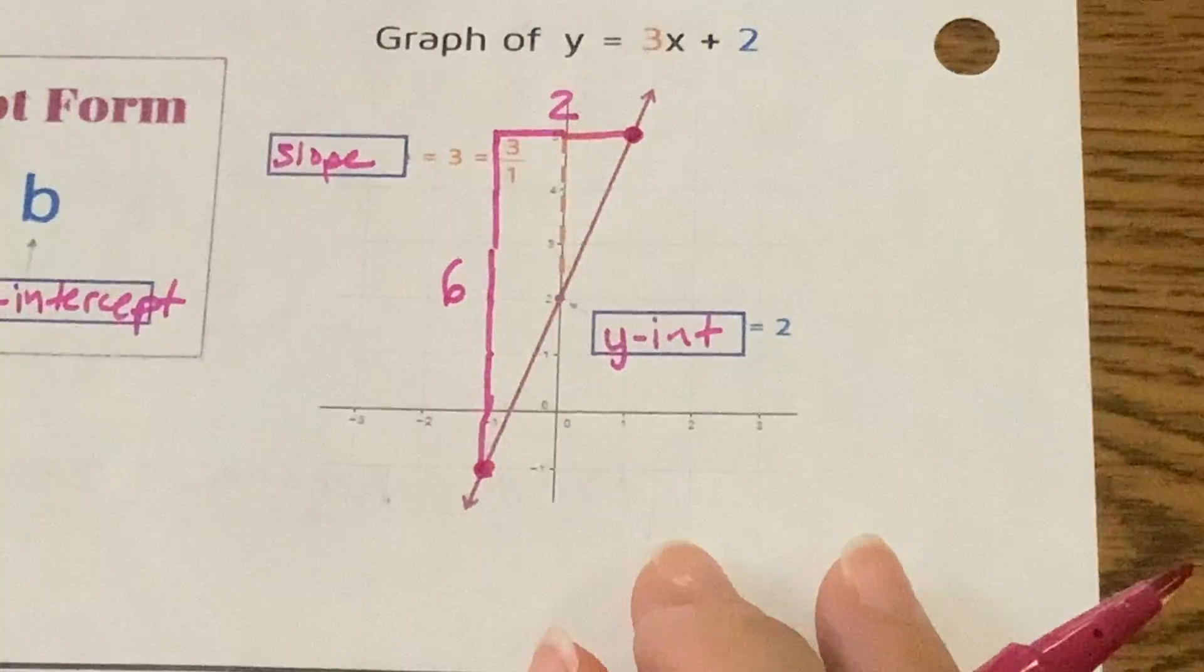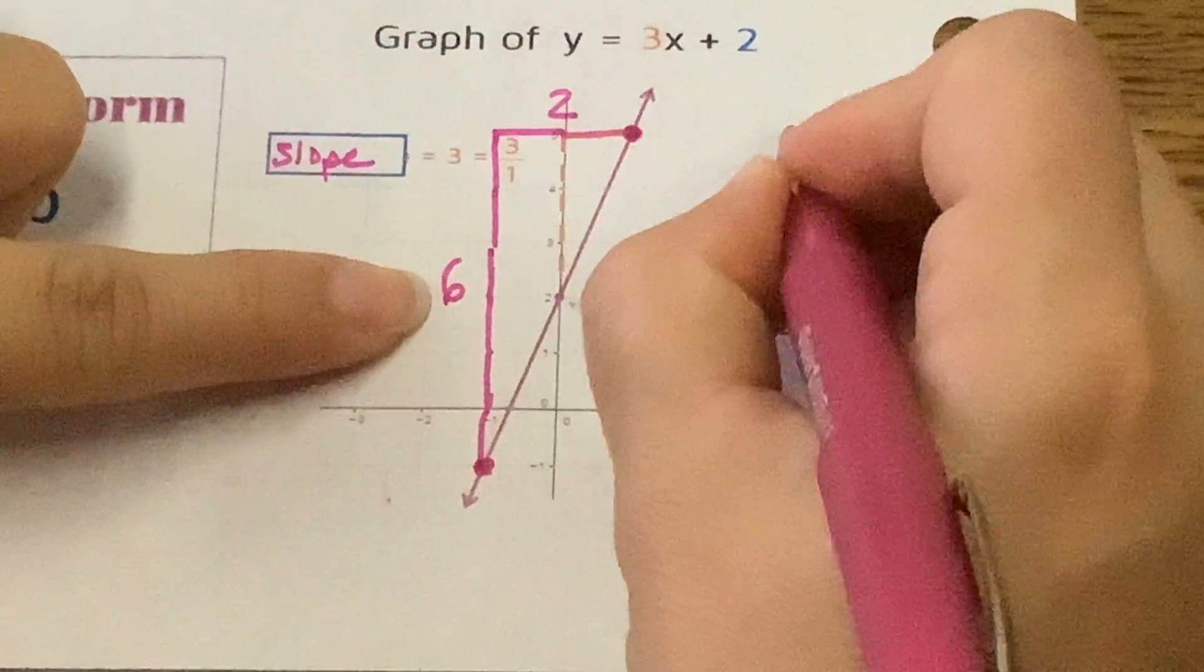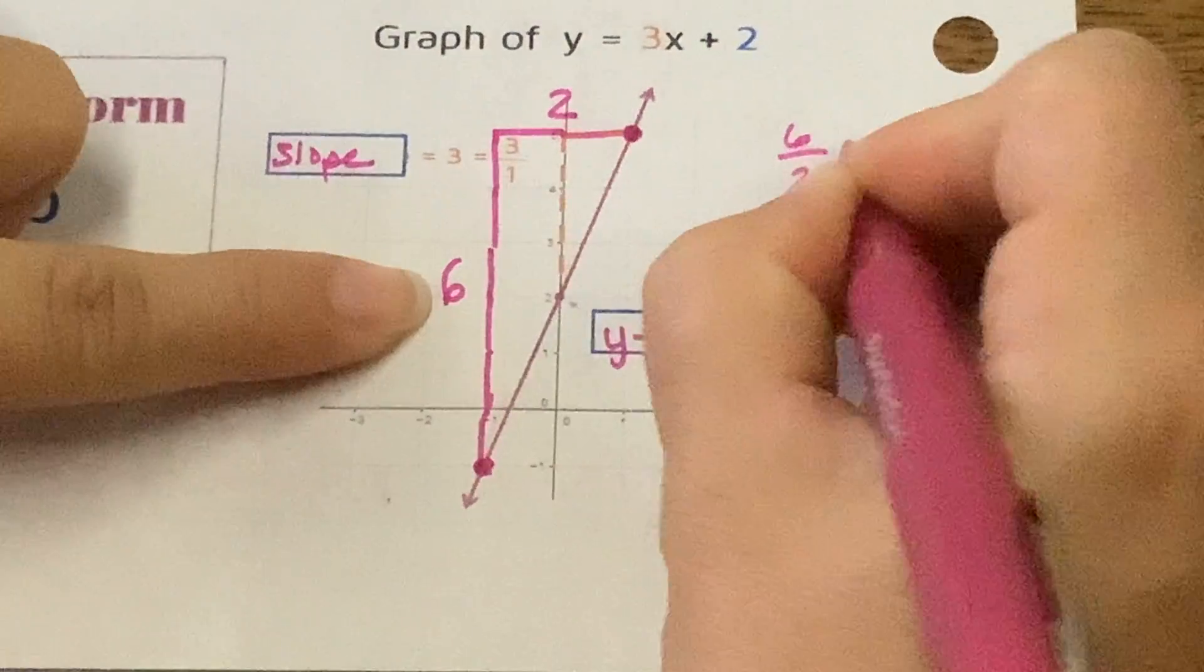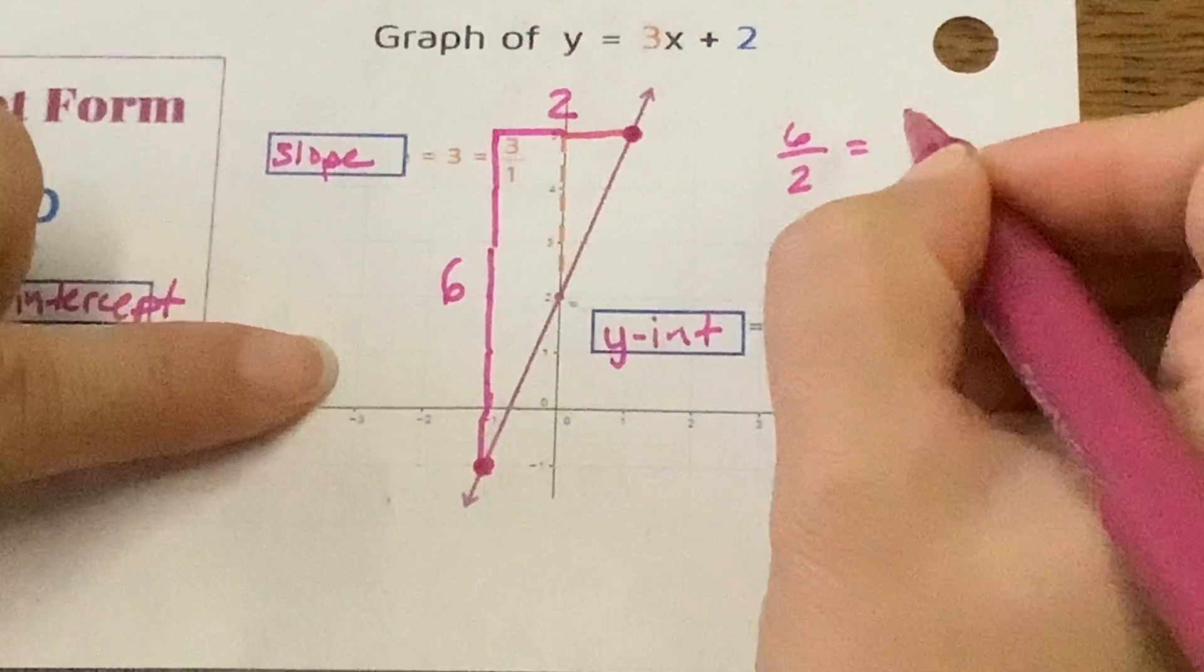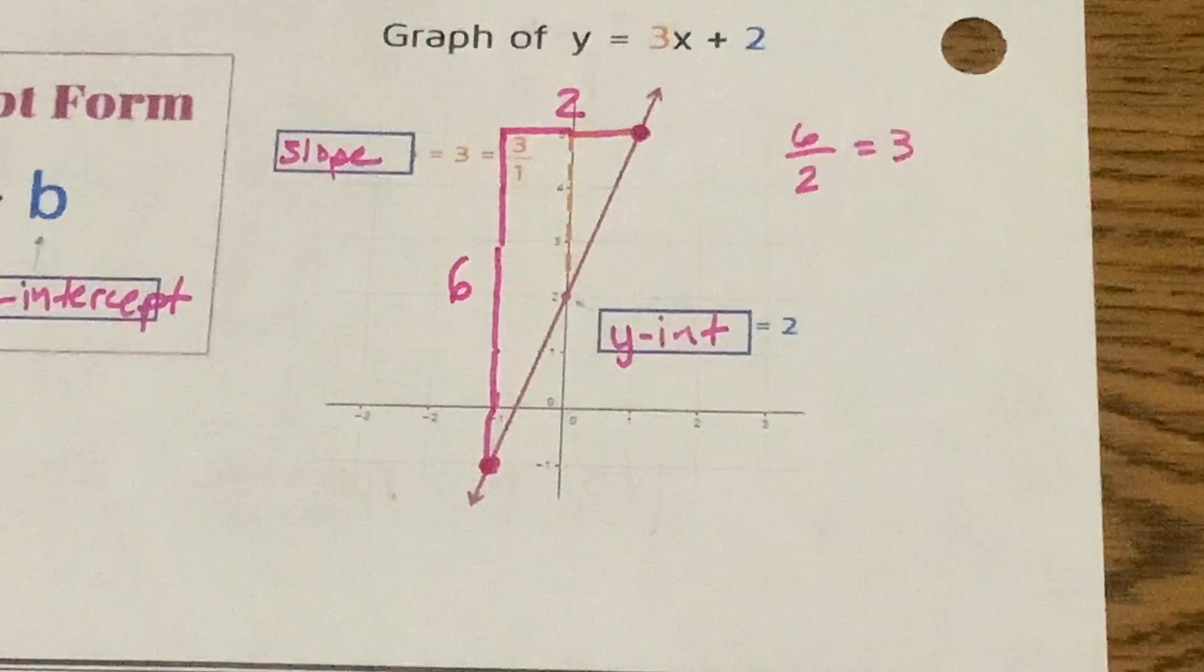Now, we do rise over run. How far do we rise? How do we run? Well, it's six divided by two. So did the slope change?